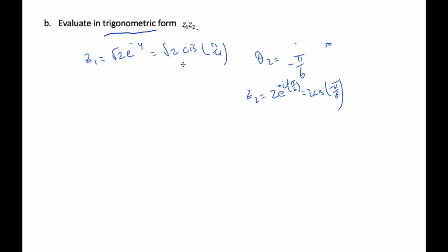So z1 times z2 will be root 2 cis pi by 4 times 2 cis negative pi by 6. I'm going to multiply the coefficients, which is just 2 root 2 cis,